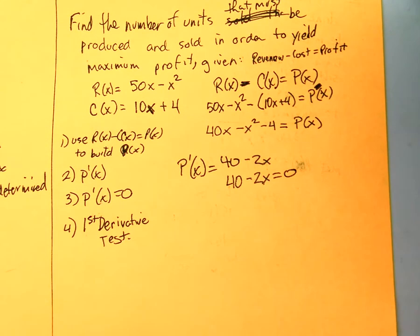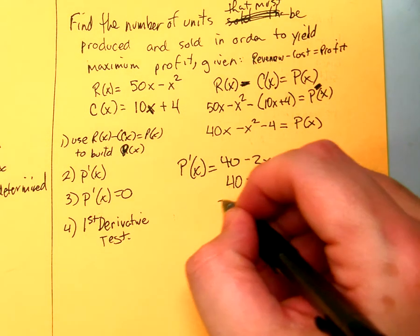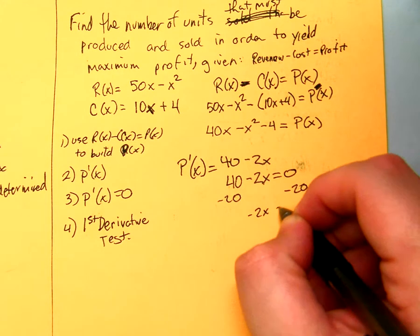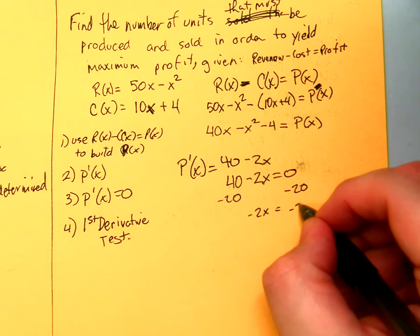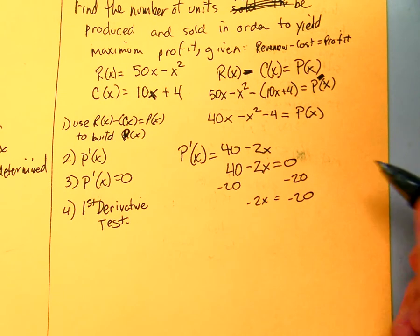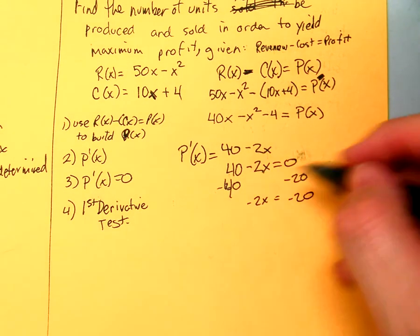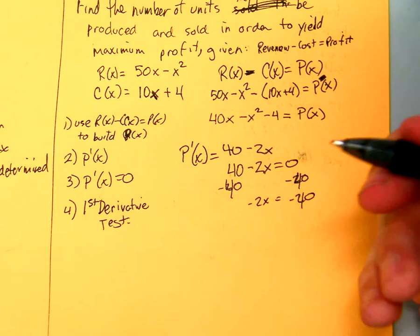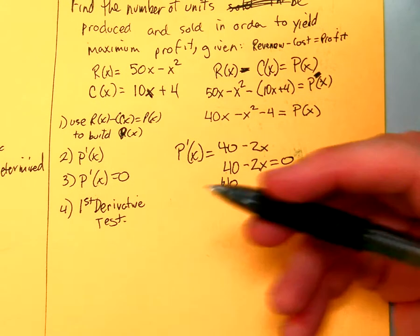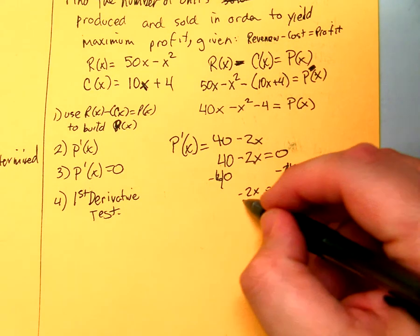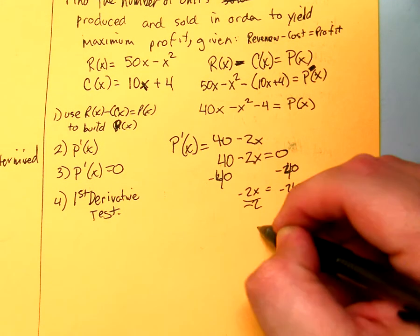Set it equal to 0. Solve for X. Subtract 40. Negative 2X equals negative 40. Because I fear no negative number. I know my answer. Like I said, I do that every once in a while. I know what the answer is going to be. So in my head I'm already thinking about the answer. Divide by negative 2. Divide by negative 2. X is equal to 20.